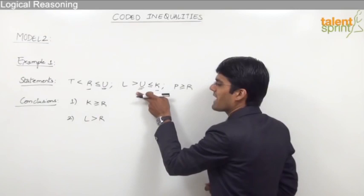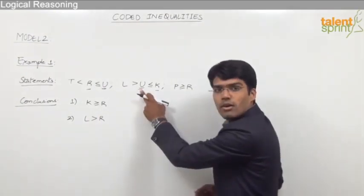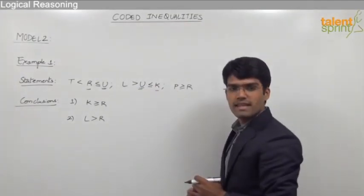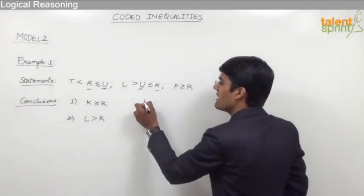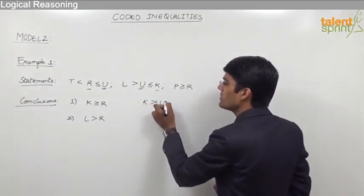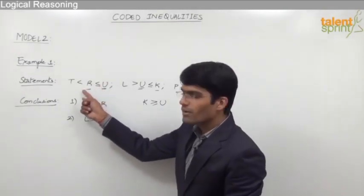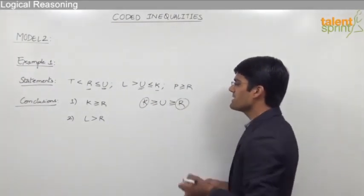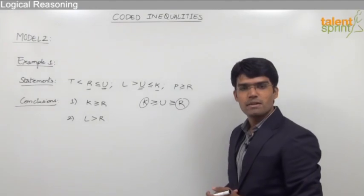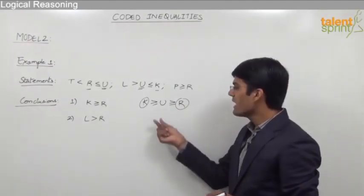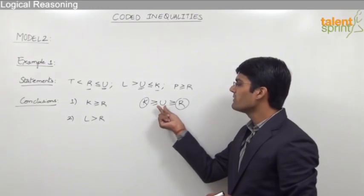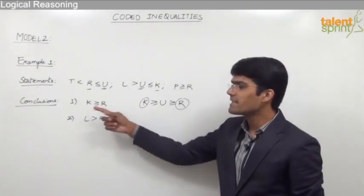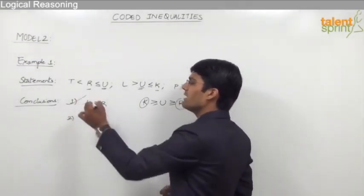Reading from this side: k ≥ u (since u ≤ k means k ≥ u). And from statement 1, u ≥ r. So we have k ≥ u and u ≥ r. Since both inequalities are the same type (≥), the definite relationship between k and r is k ≥ r — which is exactly what conclusion number 1 states. So conclusion 1 is true.